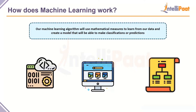Our machine learning algorithm will use mathematical measures to learn from data and create a model that makes classifications or predictions. In supervised learning it looks at the labels and figures out a way to match data points to labels — coming up with rules that most effectively break down the data. After doing so it creates a model that allows developers to build applications where you feed data in and get an output. In most cases though you don't know how it works underneath the hood.